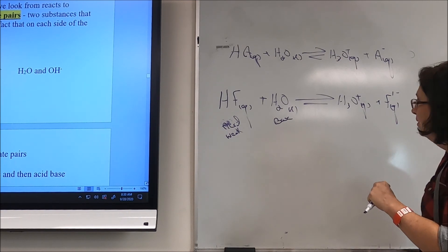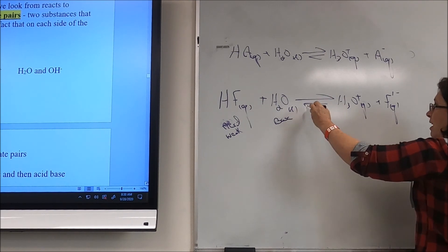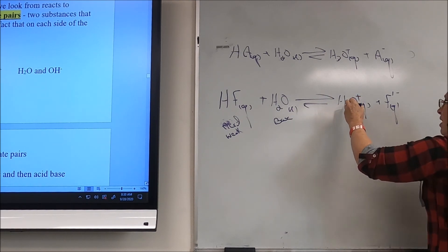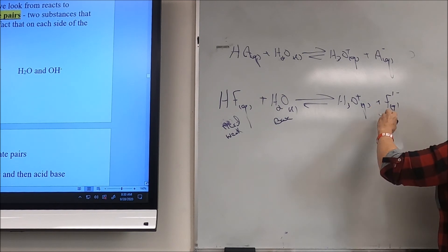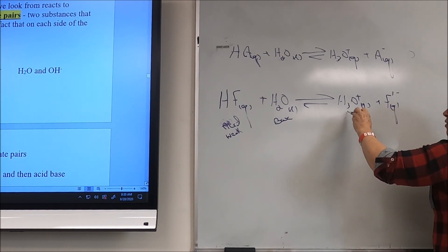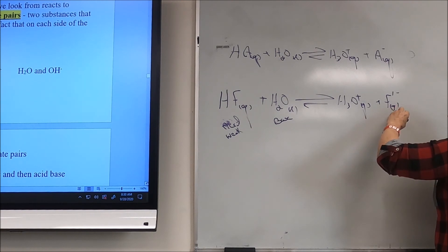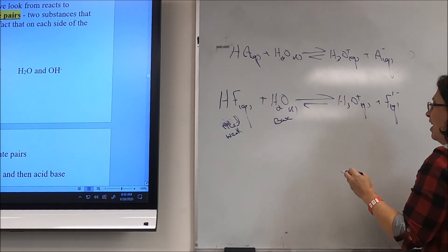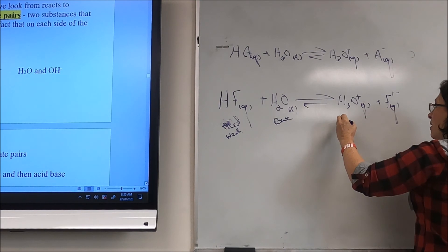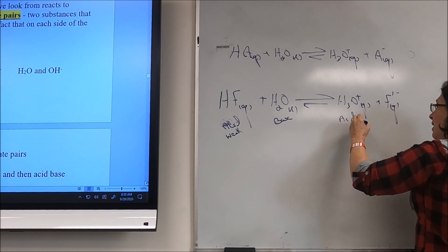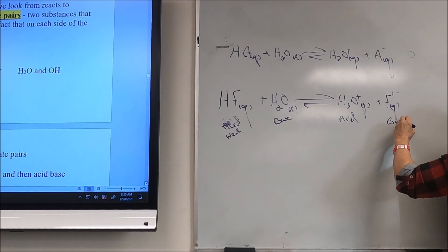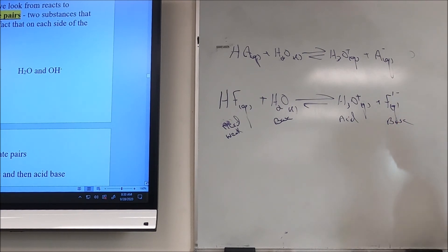Now let's look at this reaction running in the reverse direction. The hydronium ion donates a hydrogen to the fluoride ion to make HF, so that makes the hydronium ion an acid and the fluoride ion a base. Under the Bronsted-Lowry definition, a base doesn't have to contain a hydroxide ion — hydroxide is a base, but it's not the only base.